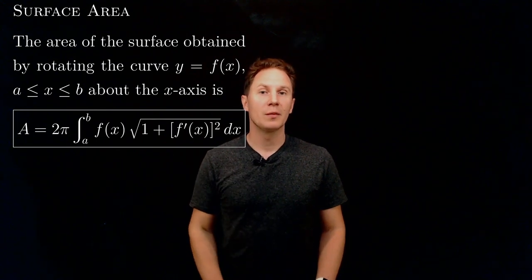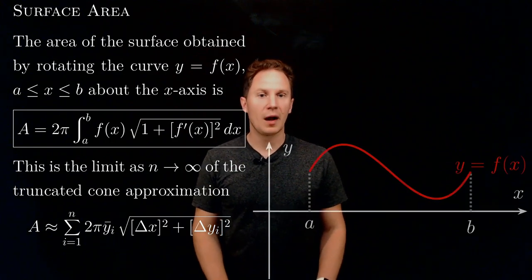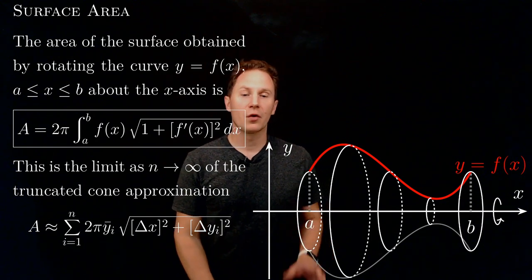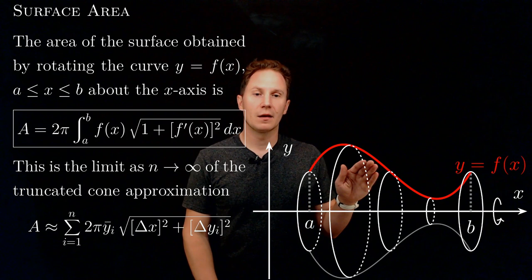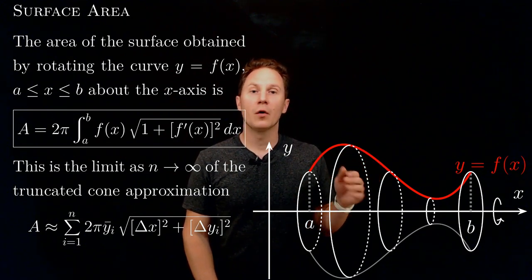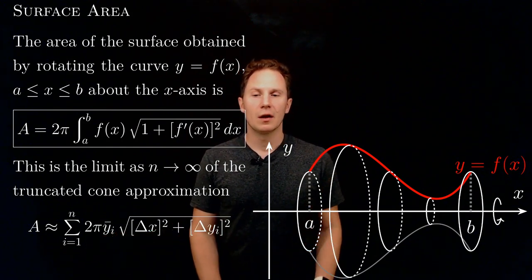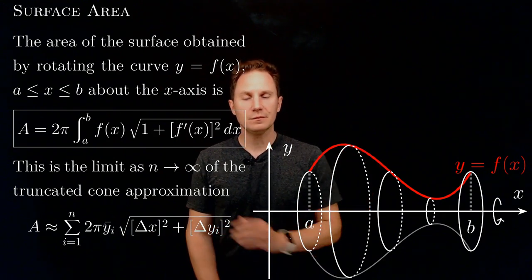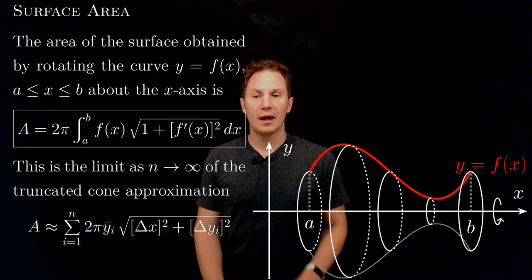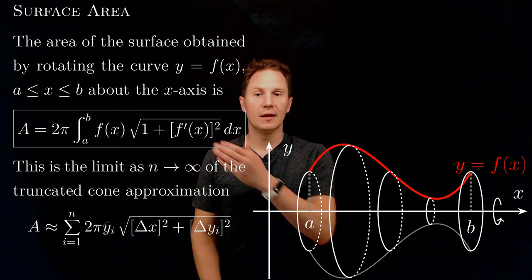This integral formula can be obtained from the limit of the truncated cone approximation to the surface area. This is done by taking the graph of a function f over the interval between a and b, rotating it about the x-axis to get a surface of revolution, then approximating by subdividing the interval a to b into smaller sub-intervals. Each piece is approximated as a truncated cone with surface area given by 2π times the average height times the square root of Δx² plus Δy². Factoring out Δx from under the square root and letting n go to infinity — that is, Δx go to zero — we get the integral formula.